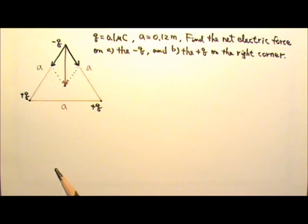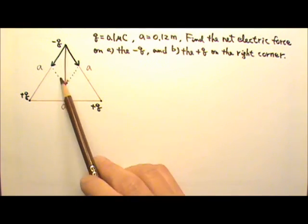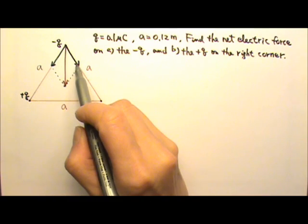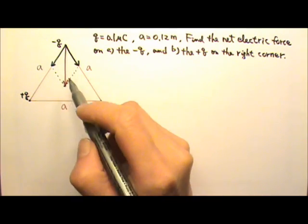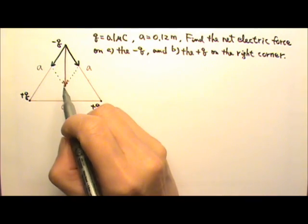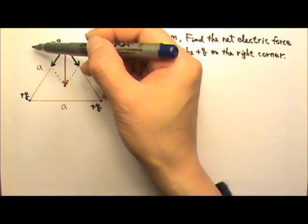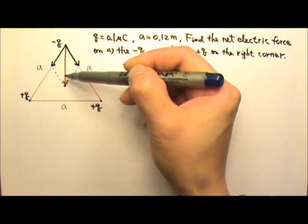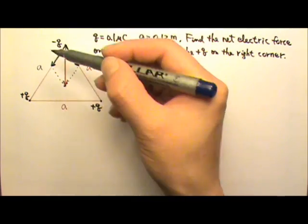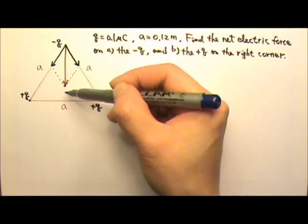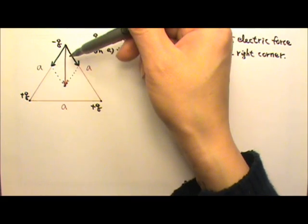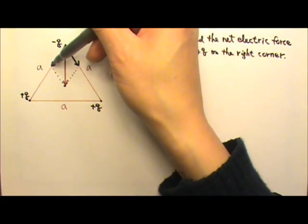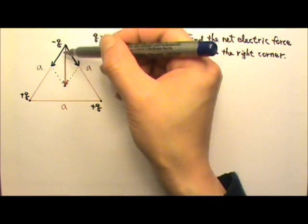Now we need to find the magnitude of the net electric force. One way to add the two electric forces together is to add them by components. We can look at the direction perpendicular to the sum and parallel to the sum, and use that as our coordinate system. These two are slanted forces, so we can find the components of these slanted forces in those two directions.